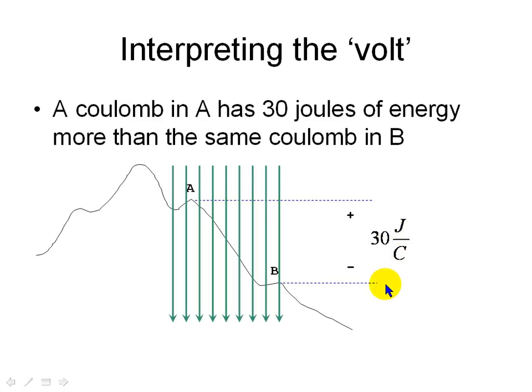What it means is that a Coulomb in A is richer in energy than the same Coulomb in B. Potential energy, remember?